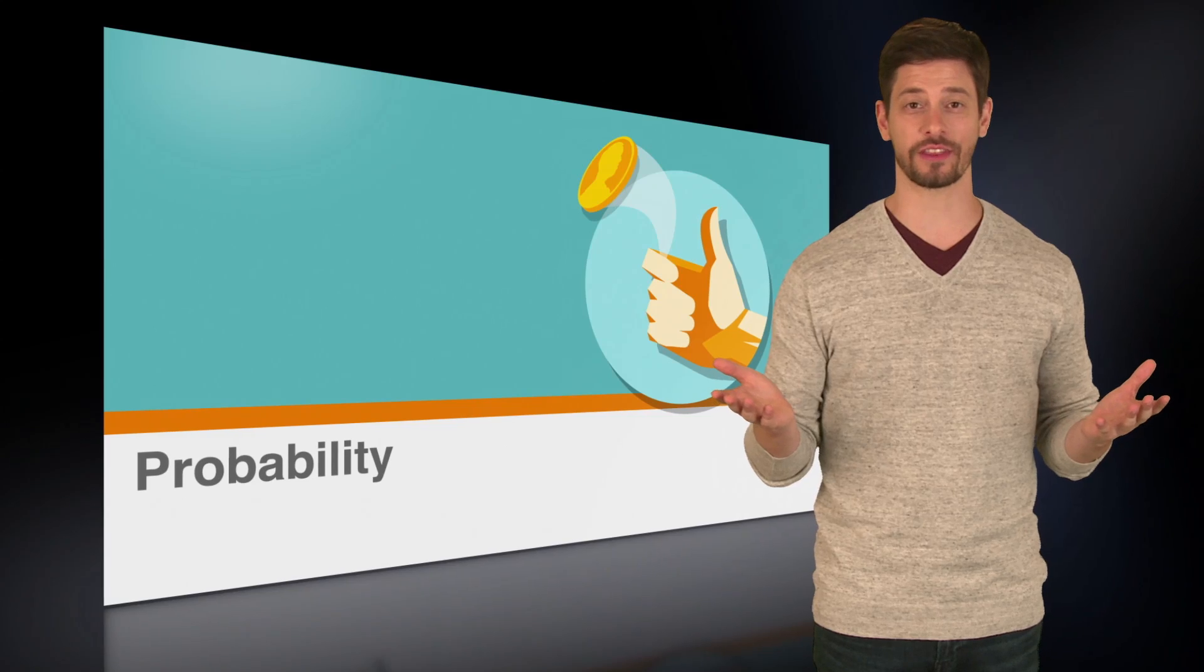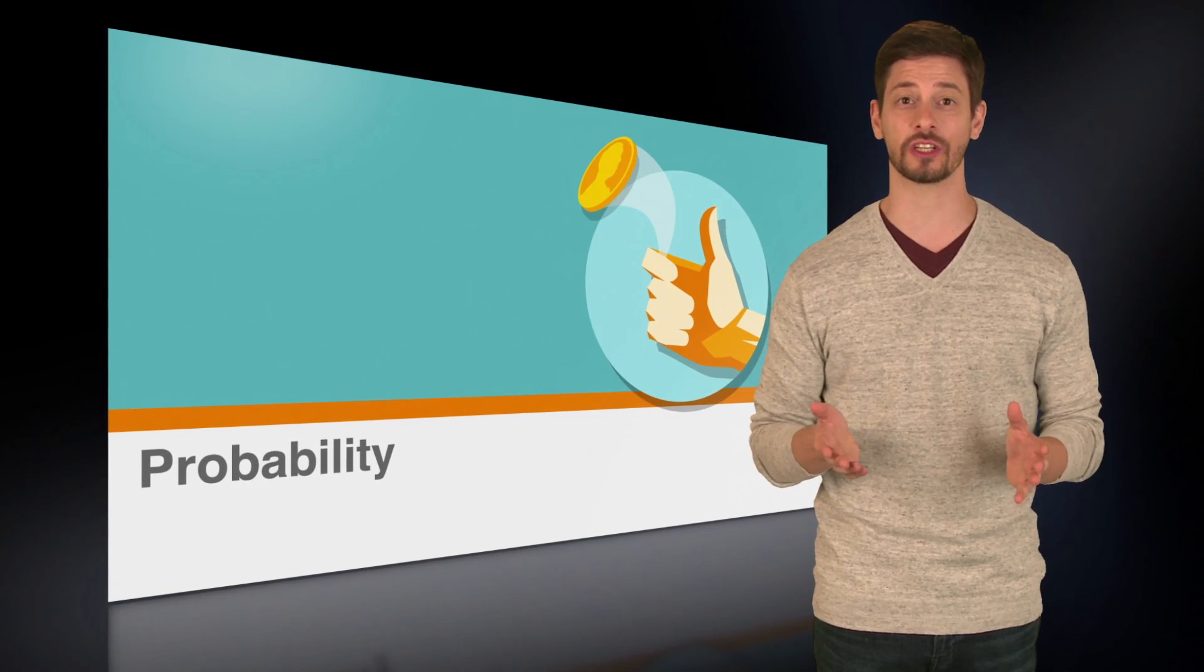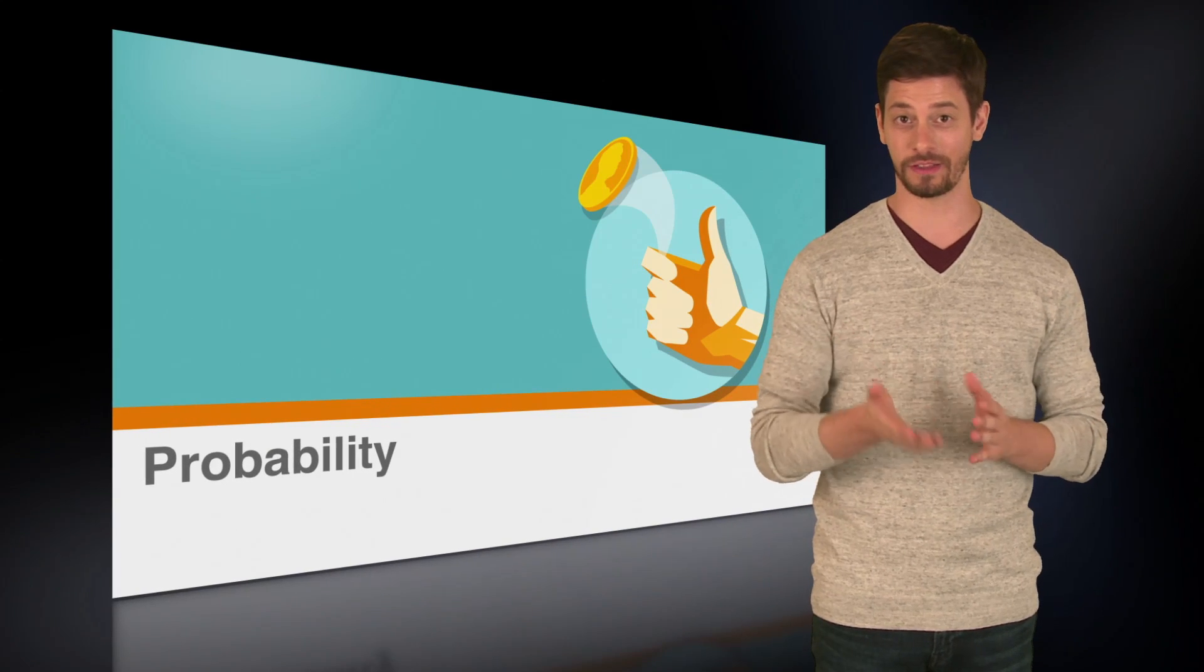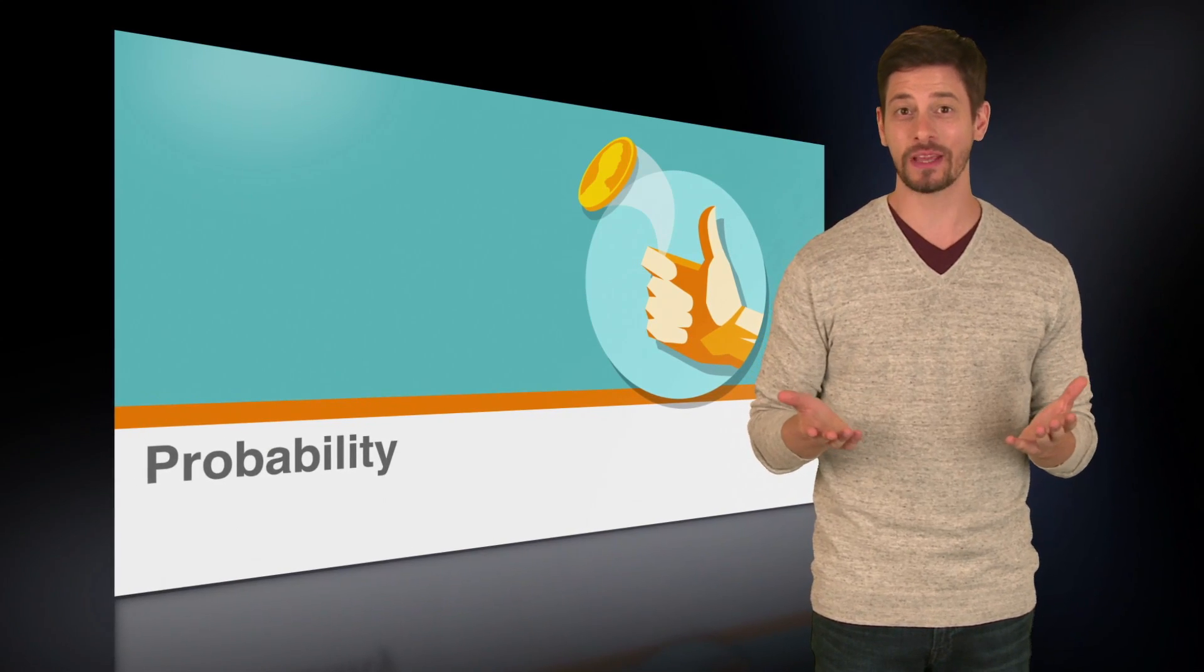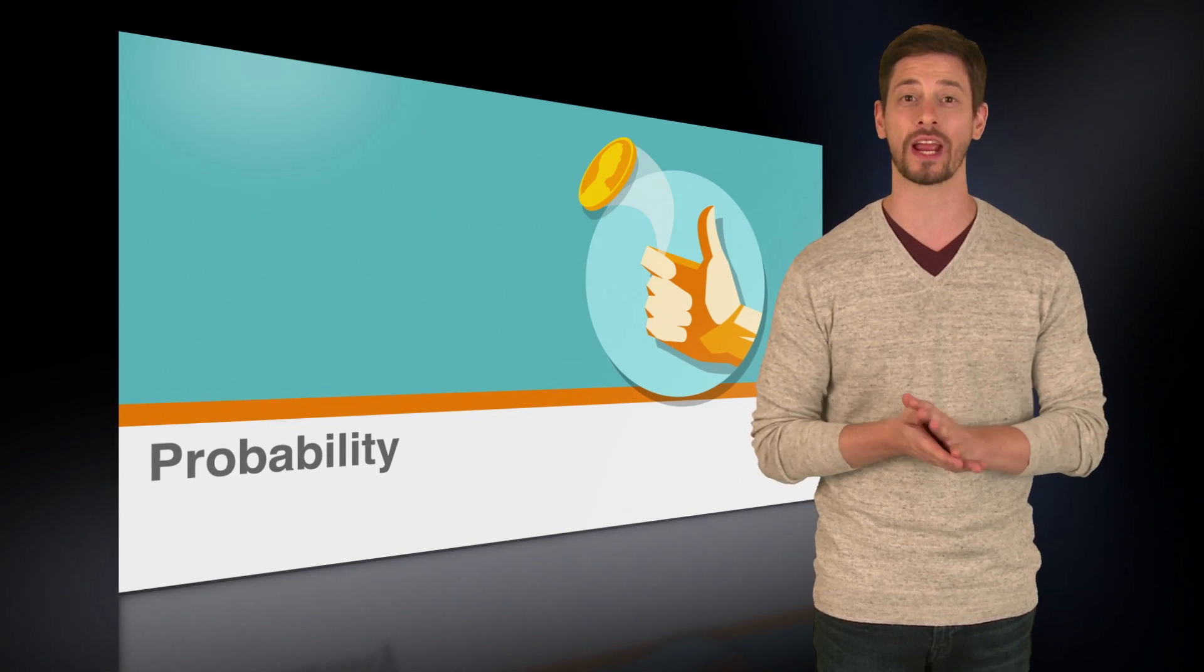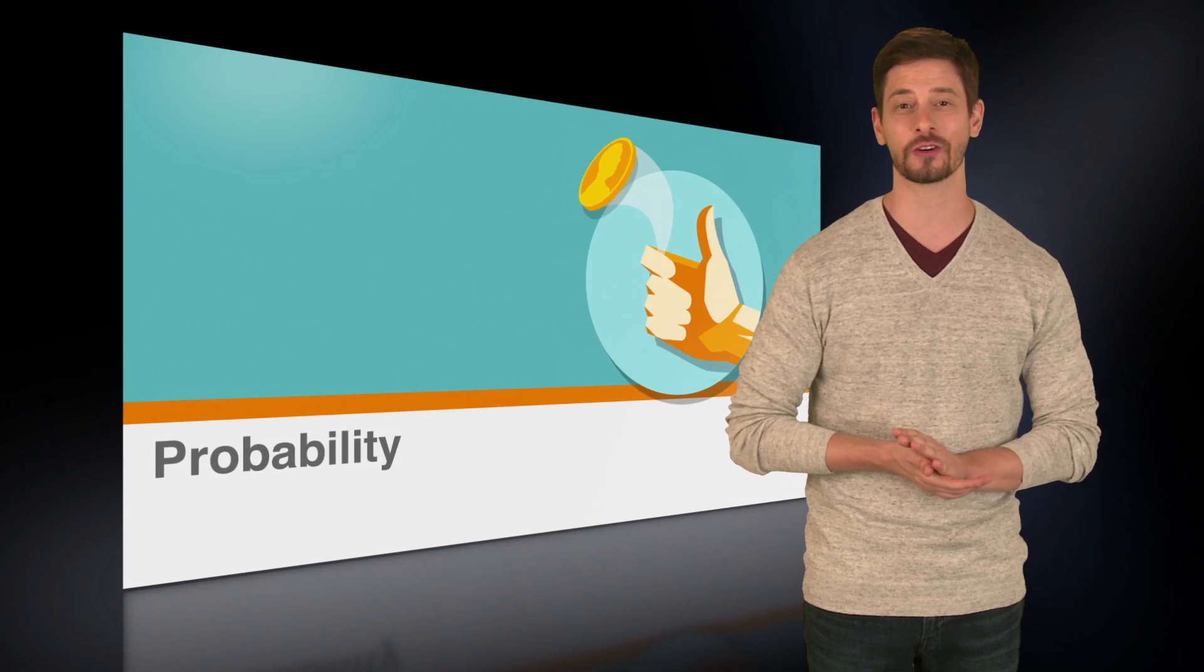So when you're solving for probability, you're just looking at the likelihood that something will or won't happen. Aside from using this knowledge on the ACT, understanding probability can help you make logical decisions based on numerical data. For instance, if you love the sunshine, you might not be happy attending a university in a city where there's a high probability of rain 300 days a year. Something to keep in mind after you ace the test.